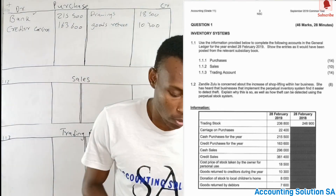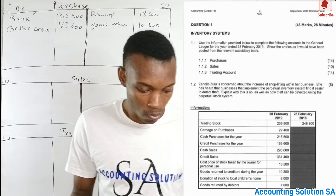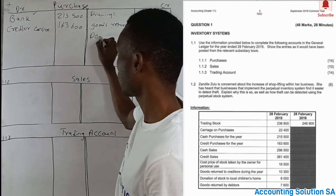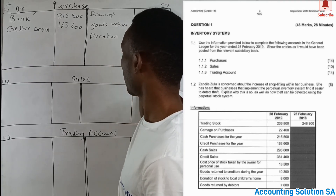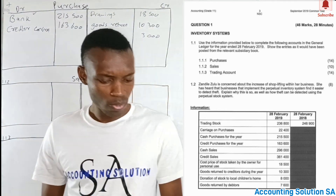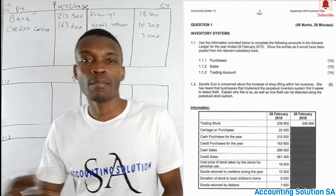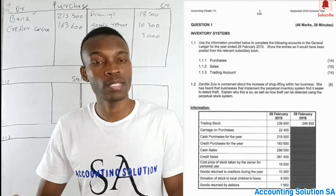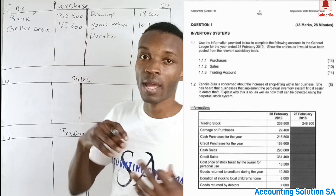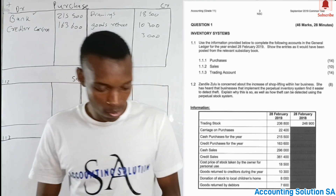That's a goods return, simple as that. Then we have a donation of stock to a local children's home of 8,000, which means that donation is going to reduce our purchases. Also, we have goods returned by a debtor — this is not part of purchases. A debtor is the person who comes to purchase from us, which means it's going to reduce sales, not purchases. Purchases are only reduced if we are the ones who return to the supplier, not if the debtor returns to us.